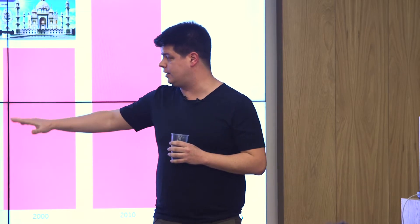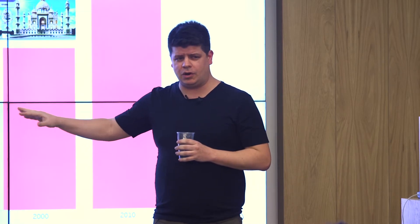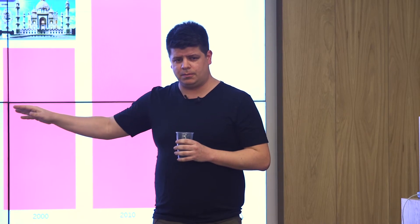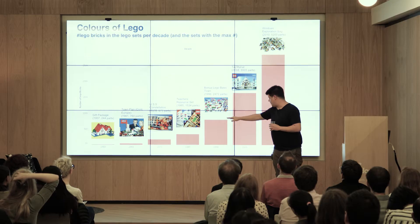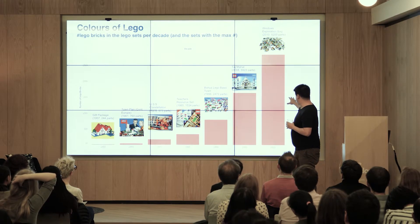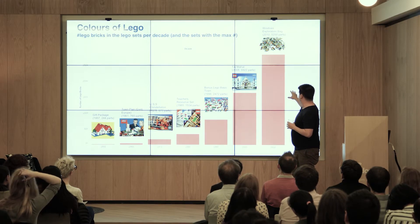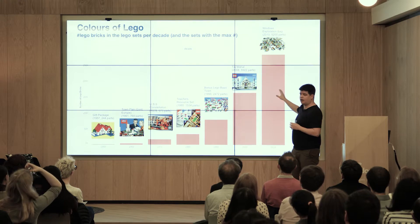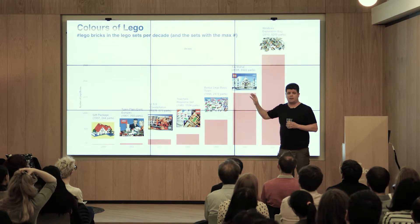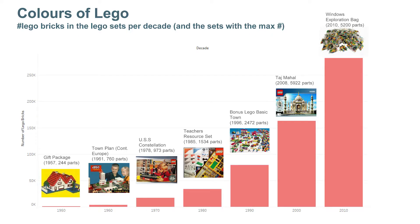With the 50s, they started with the first Lego sets. At that time, there were only a couple of hundred pieces in only one set. Now, as you can see, in the current decade — in 2010 — we have over 250,000 Lego pieces across hundreds of different sets. So there's been a great change.